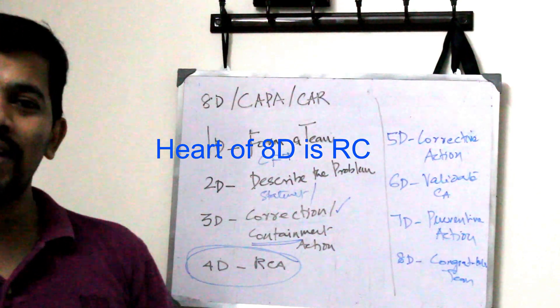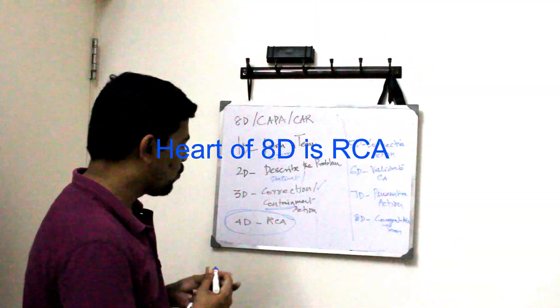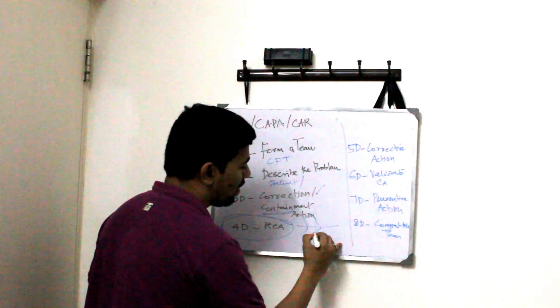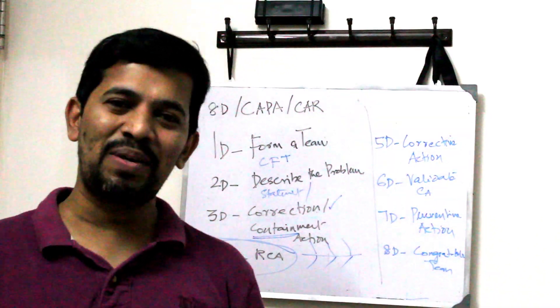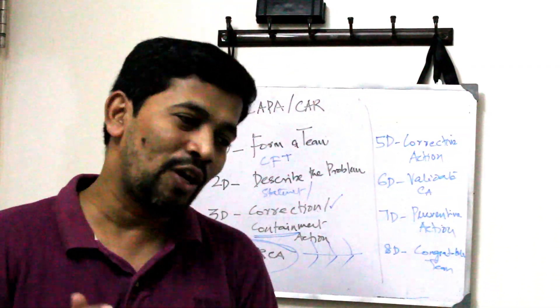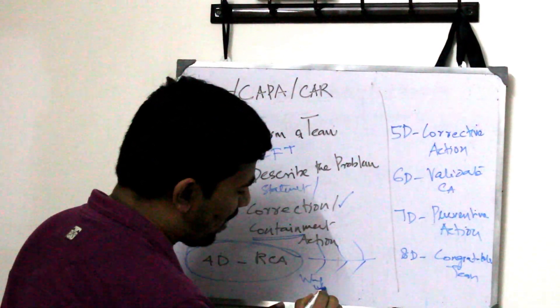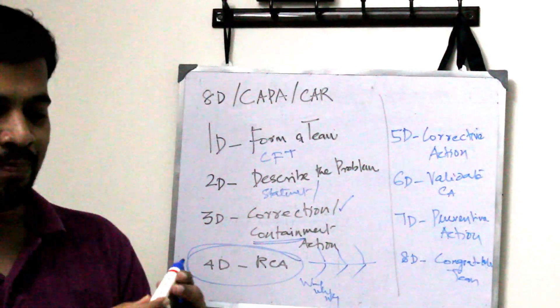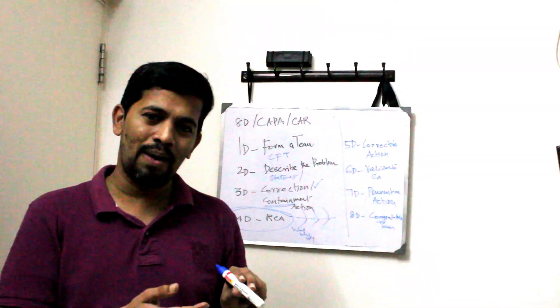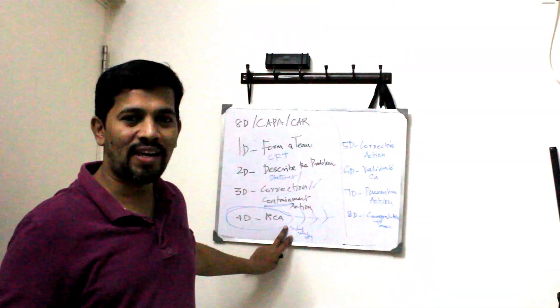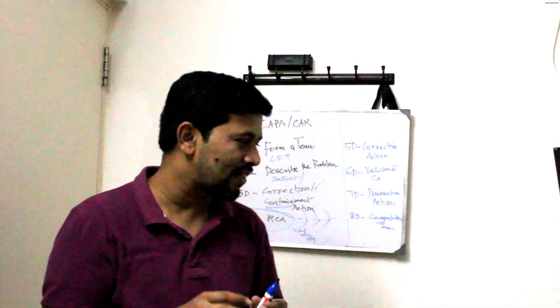And then the heart of the 8D is root cause analysis. For root cause analysis you can use different things. You can use a fishbone diagram. So like man, machine, method, material, measurement, mother nature you can use it. Or you can use 5Y analysis. You can ask why. 5Y you can ask or Y-Y analysis you can ask why this happened. Why the white word is missing. And why it happened. All these you can do root cause analysis. We are just pinning down to find out the underlying root cause.